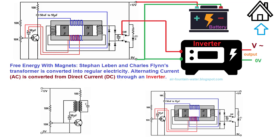Levin seamlessly integrates Charles Flynn's Free Energy Transformer into the equation, laying the groundwork for the revolutionary breakthrough. By combining Flynn's transformer with Meissner's Circuit, the result is an astonishing scenario where the output power exceeds the input power, an occurrence known as overunity.